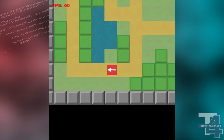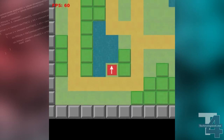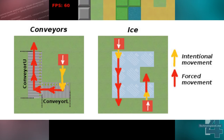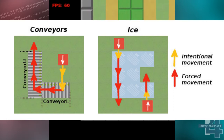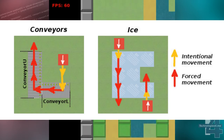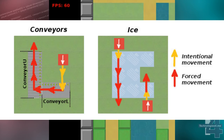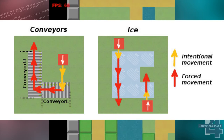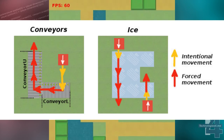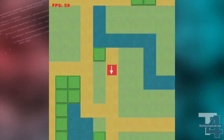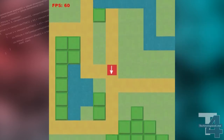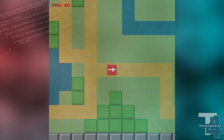Conveyor belts will force the character to move in a specific direction when they stand on them, until the character's movement is blocked by a solid object or they have been moved off of the conveyor. Ice tiles will force the character to keep moving in the direction they were travelling when they enter the tile, until they encounter a solid object or have been moved off of the iced area.